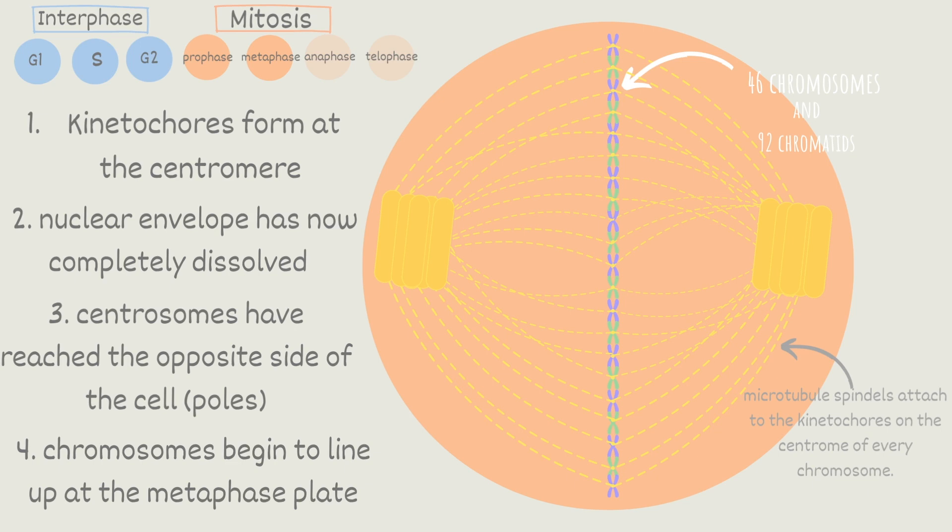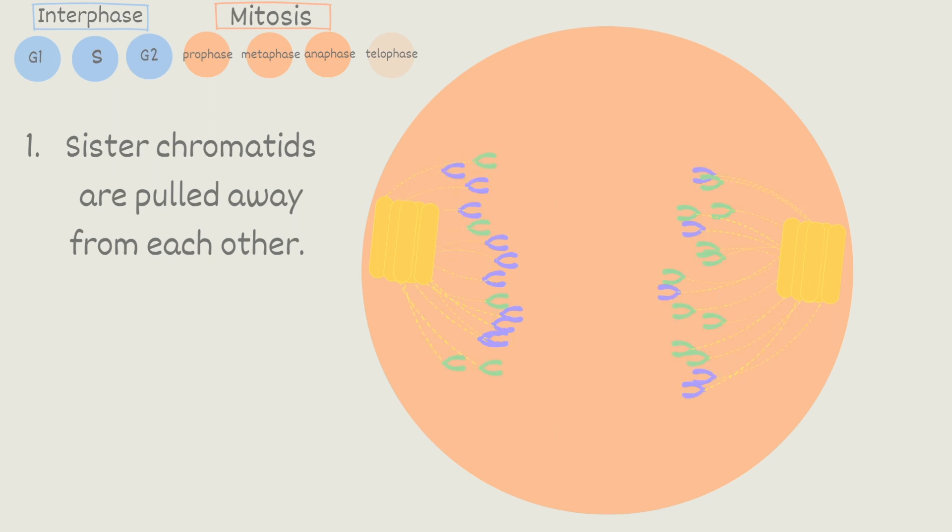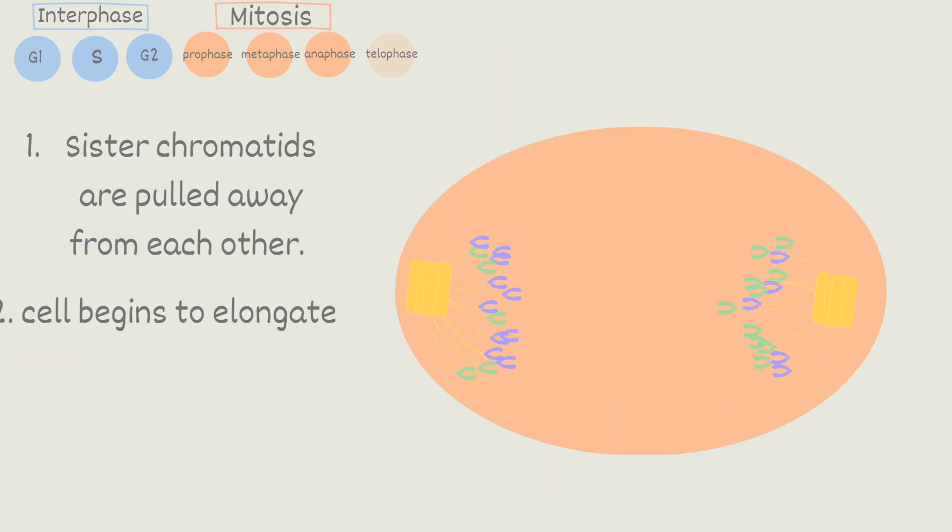Once all chromosomes are attached to the microtubules the cell enters anaphase. Here the sister chromatids are pulled away from each other at both ends. So 46 chromatids are pulled to one side while 46 chromatids are pulled to the other side and we are left with 46 chromosomes on both sides. Also notice there is a mix of maternal and paternal chromatids on both sides of the cell. It's not just paternal on one side or maternal on the other. Secondly the cell begins to elongate and accommodate both sets of chromosomes.